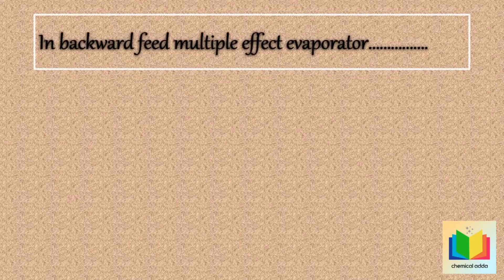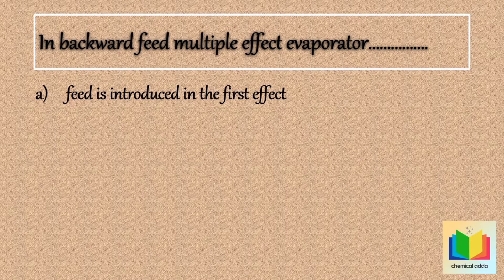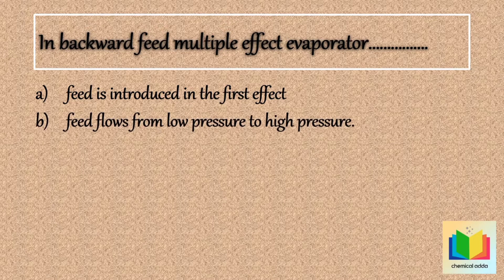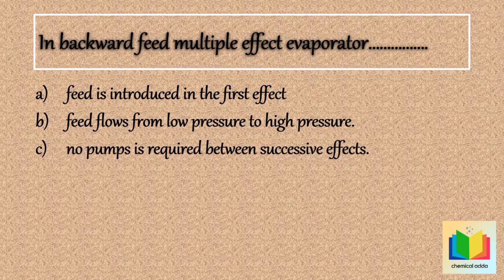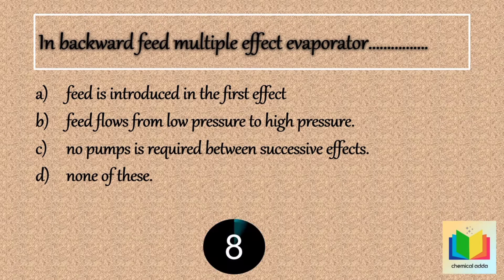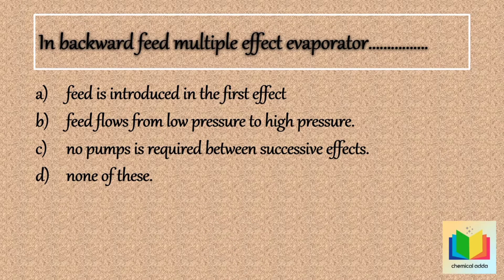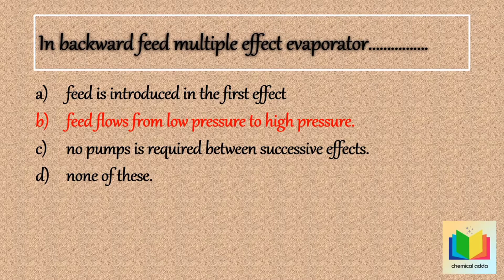In backward feed multiple effect evaporator, options are: option A, feed is introduced in the first effect; option B, feed flows from low pressure to high pressure; option C, no pump is required between successive effects; option D, none of these. So answer is option B, feed flows from low pressure to high pressure.